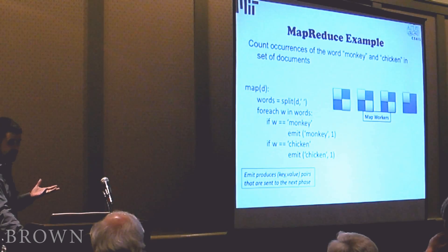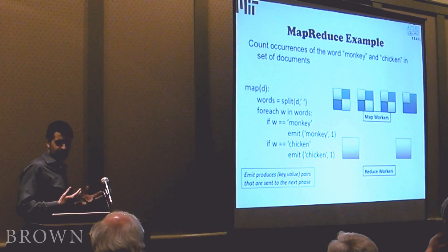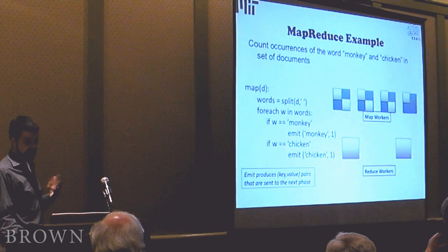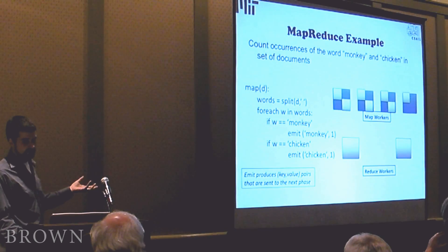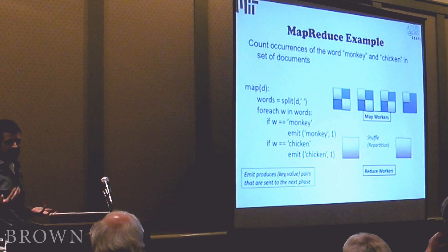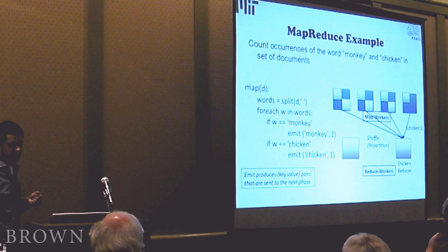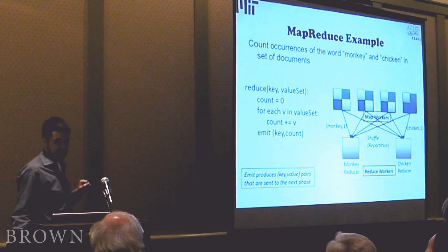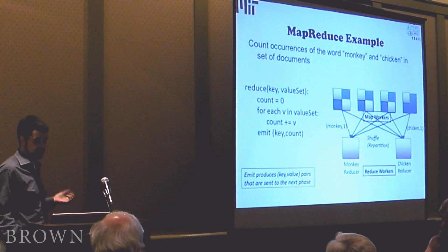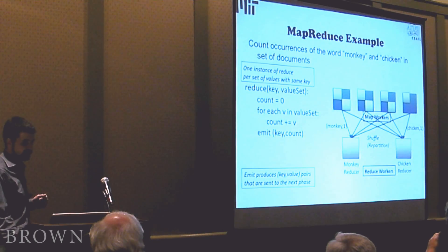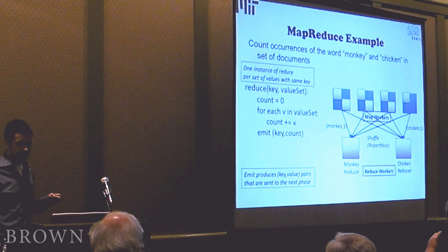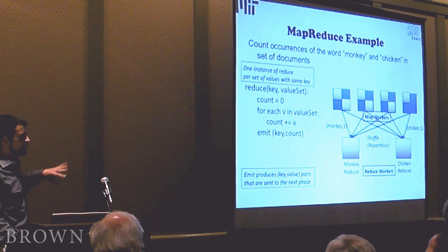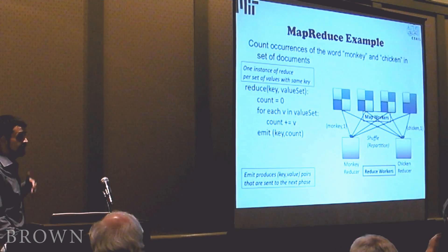Once the map workers have applied the map to their documents, the output tuples are sent to reduce workers. You can think of the reduce as just being like a group-by in a parallel database system — each worker is responsible for one group. We have a group for 'monkey' tuples and a group for 'chicken' tuples. This is sometimes called shuffle in MapReduce — it's basically a repartition operation. All the chicken records go to the chicken reducer, all the monkey records to the monkey reducer. The reducers apply the reduce function, which sums up the counts. The reduce function is called once for every set of values with the same key. The only thing the programmer writes is the map function and the reduce function; the framework takes care of executing it.